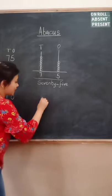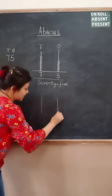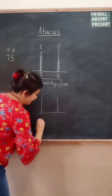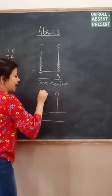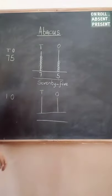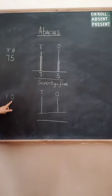First you will draw an abacus with two stands. Ones and tens. The number here is 1, 0, 10. Now let's give them the place value too.